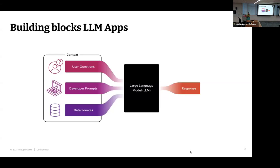In LLM applications, users typically ask questions to the application, and the developer builds prompts which are fed as inputs to the language model. Sometimes these language models also work out of data sources. They could be a public model trained by Google or another platform on a common corpus of data, which is not specific to your application domain or organization. So in order to ground the LLM to more specific use cases, we might use some data sources, and all of these inputs are fed to the LLM to get a response.